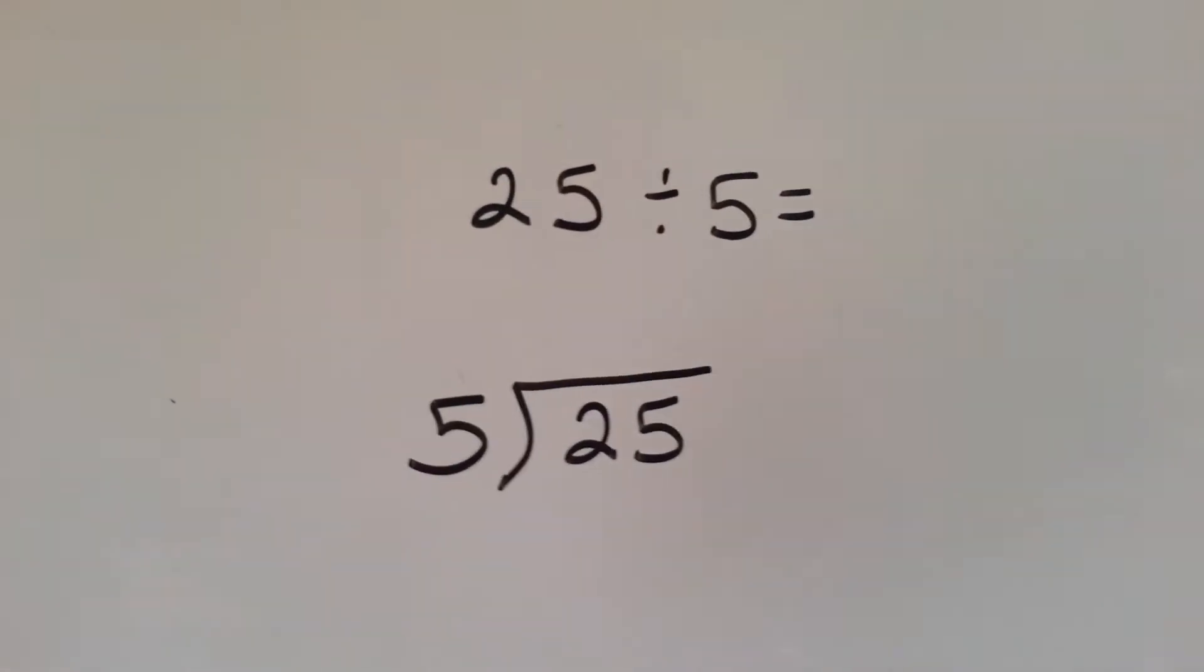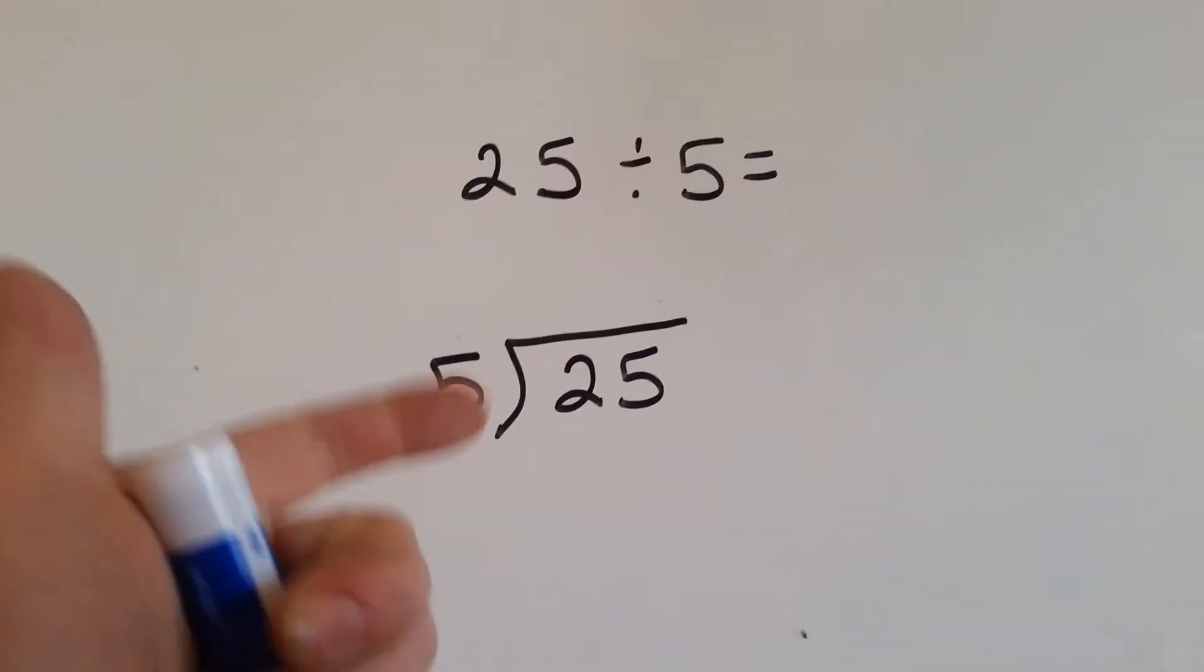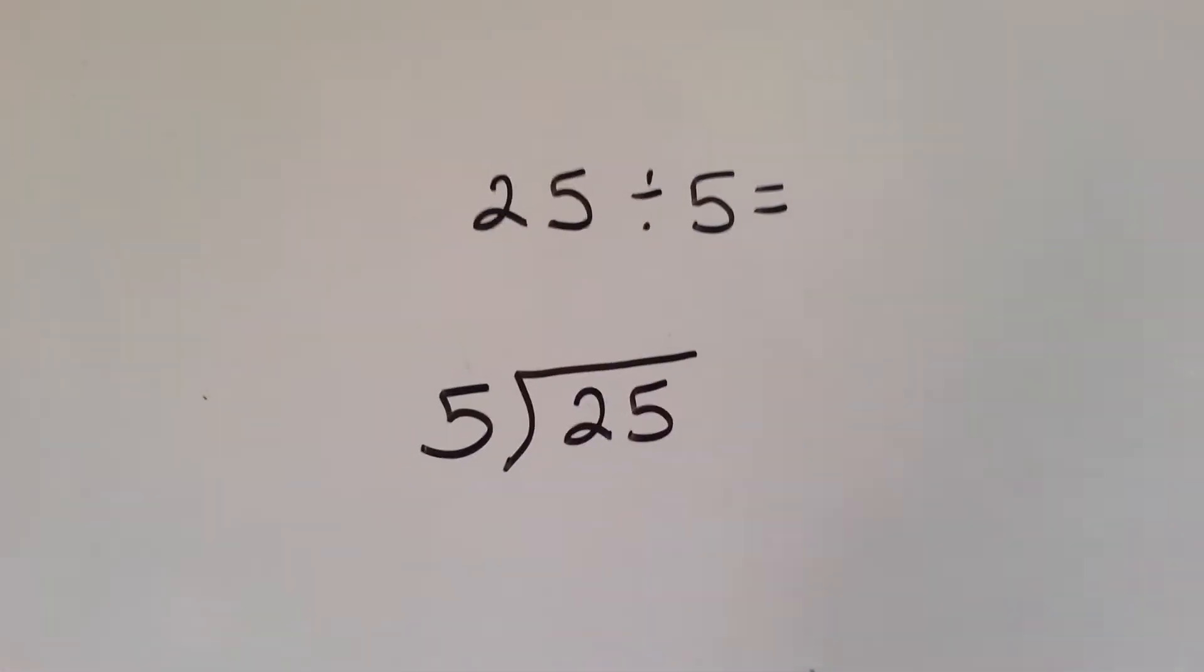Okay, a couple more and we're almost done here. 25 divided by 5. Let's count by 5's. 5, 10, 15, 20, 25. 5 fingers. So, 25 divided by 5 is 5.